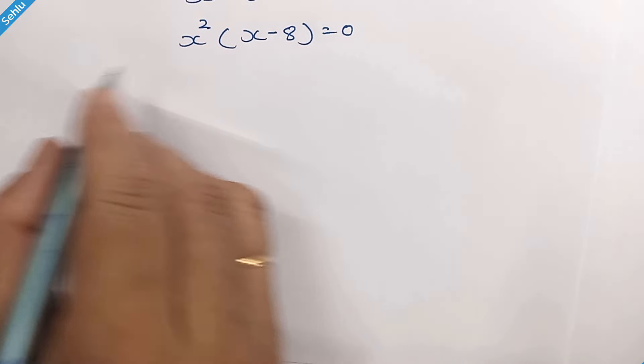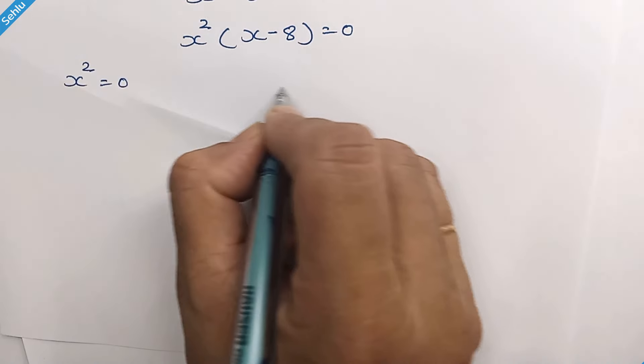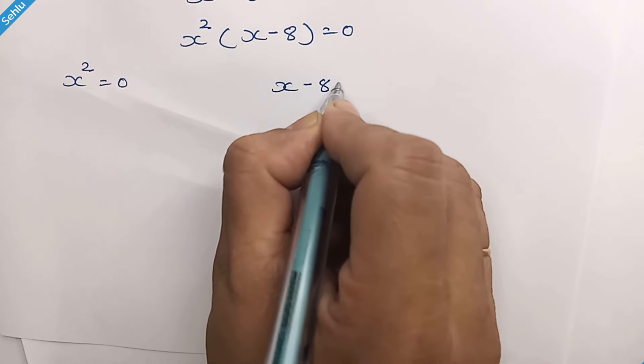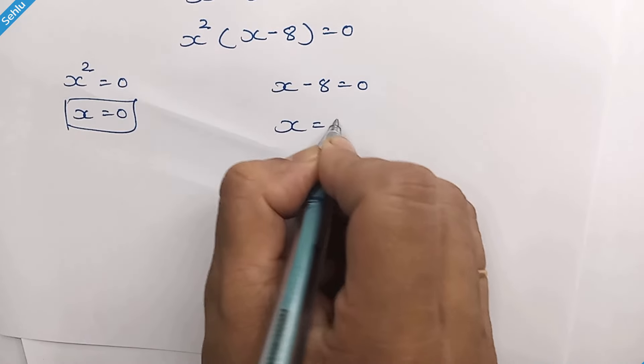So here we have 2 possibilities. x square is equal to 0 and x minus 8 is equal to 0. So x is equal to 0 and x is equal to 8.